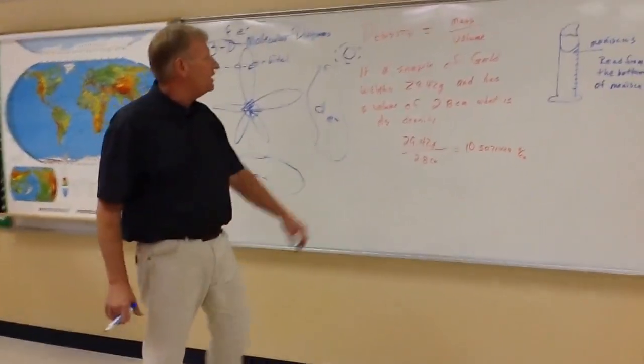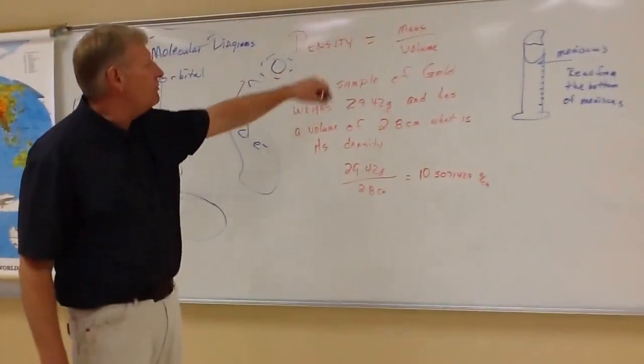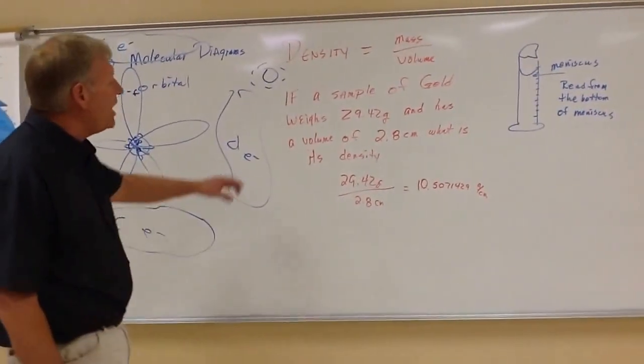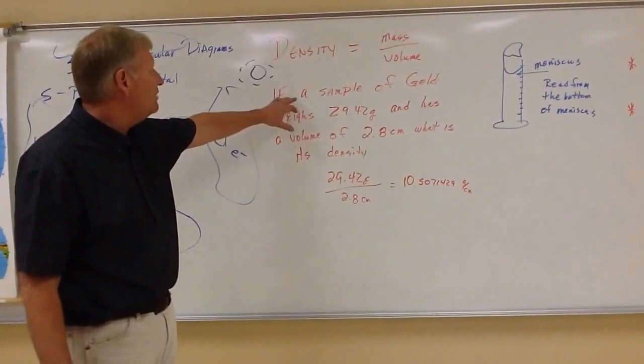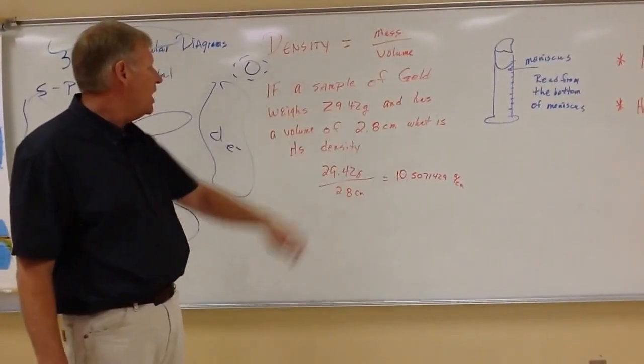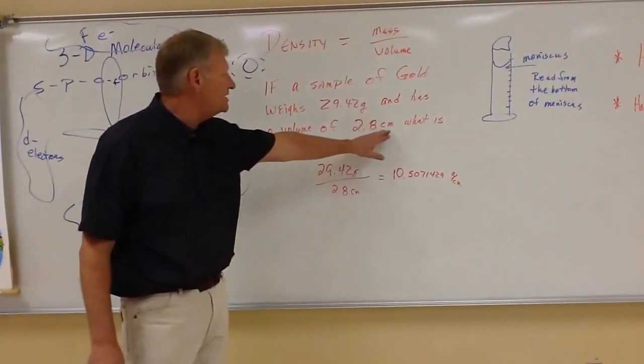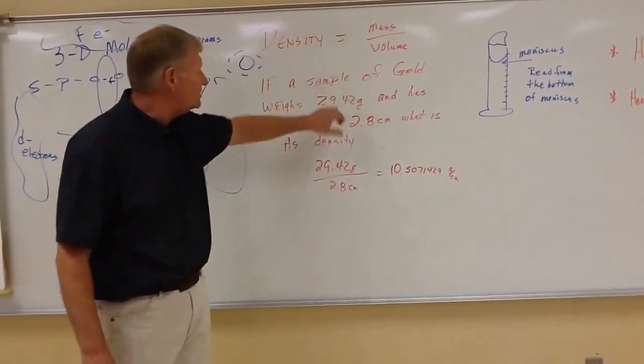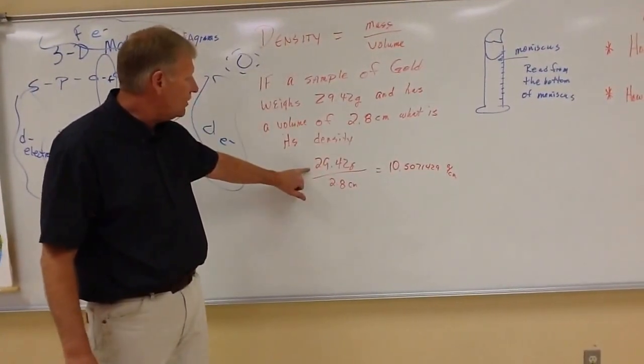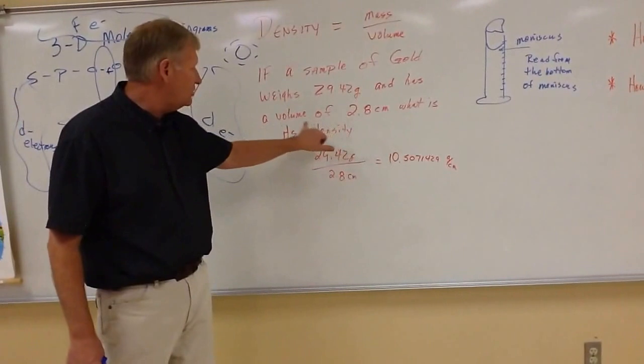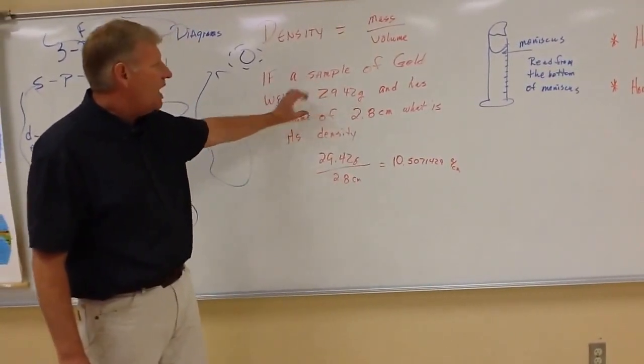You are going to have on this test, you are going to have density. Density is equal to mass over volume. So let's look at that. So here's a practice problem like you might have on your test. If a sample of gold weighs 29.42 grams and has a volume of 2.8 centimeters, what is its density? Well, once again, formula for density, the mass, so the grams is a mass. So 29.42 grams divided by the volume. It tells you it has a volume.